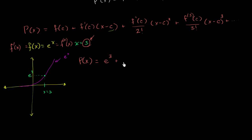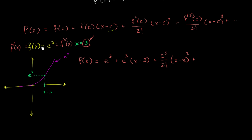Evaluating f prime at 3 gives e to the third power again, times x minus 3 — since c is 3. Plus: the second derivative of our function is still e to the x. Evaluate that at 3: you get e to the third power over 2 factorial, times x minus 3 to the second power. The third derivative is still e to the x. Evaluate at 3: e to the third power over 3 factorial, times x minus 3 to the third power. And we can keep going with this.